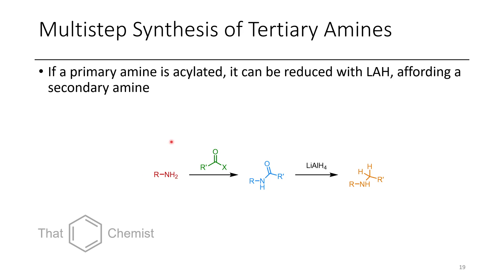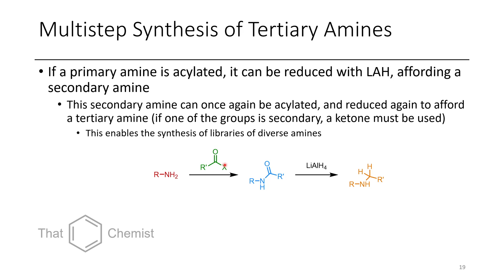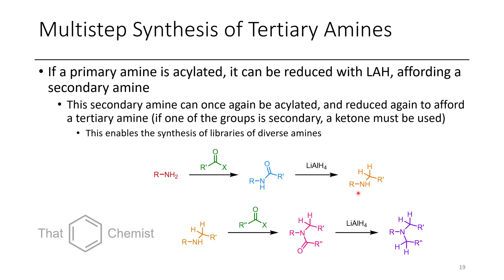A clever multi-step strategy for amine synthesis is to form an amide first — using an activated acyl chloride or anhydride — then reduce with LAH to give a secondary amine, and then acylate and reduce again. This is useful if you're not comfortable doing iminium formation for multi-step reductive amination, where you might get over-alkylation without careful control of equivalents. The strategy is: isolate the amide, reduce, isolate, re-acylate, isolate, then reduce again to get the tertiary amine. This lets you create libraries of compounds without worrying about adding two acyl groups at once.